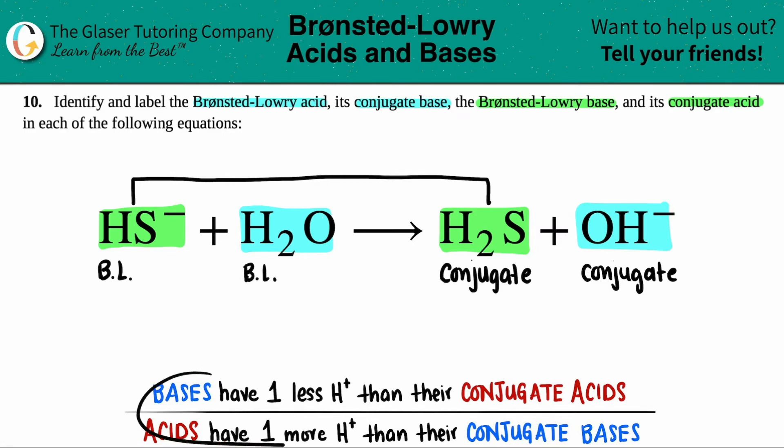And remember this, right? Acids always have one more hydrogen than the bases, the corresponding base, the conjugate base. And then likewise, the bases will always have one less hydrogen. So acids, one more, base, one less. So all you got to do is look at those hydrogens.